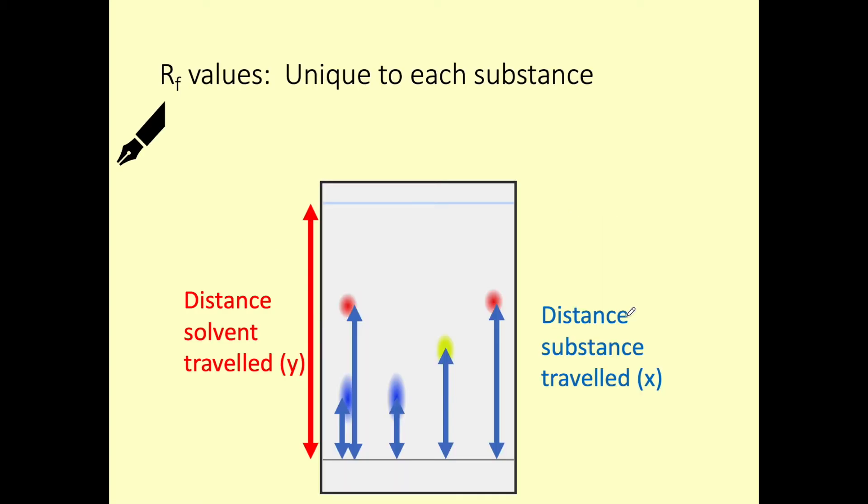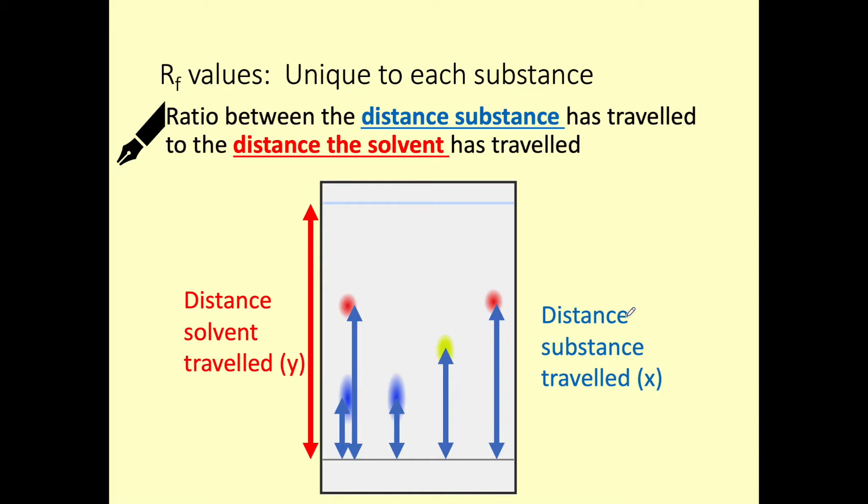So our retention factor values, they are unique to each substance and they are the ratio between the distance our substance has traveled, so from our start line to where the substance ended up. So for some substances, there might be multiple components and therefore we've got multiple RF values for that substance. And then the distance the solvent has traveled, again going from our start line but now up to our solvent line or our solvent front.